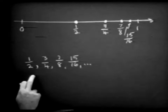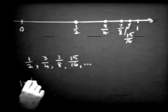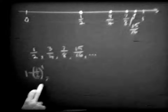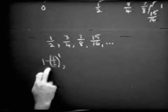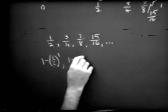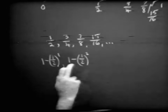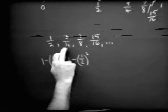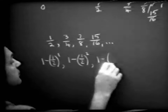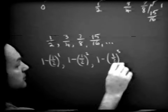Now let's write this sequence in a slightly different pattern. Let me write it as one minus one-half to the first power — that's our first term. One minus a half is still one-half. Let me then write the second term as one minus one-half squared, and one-half squared is a fourth, and one minus a fourth is three-fourths, so that sure enough is our second term.